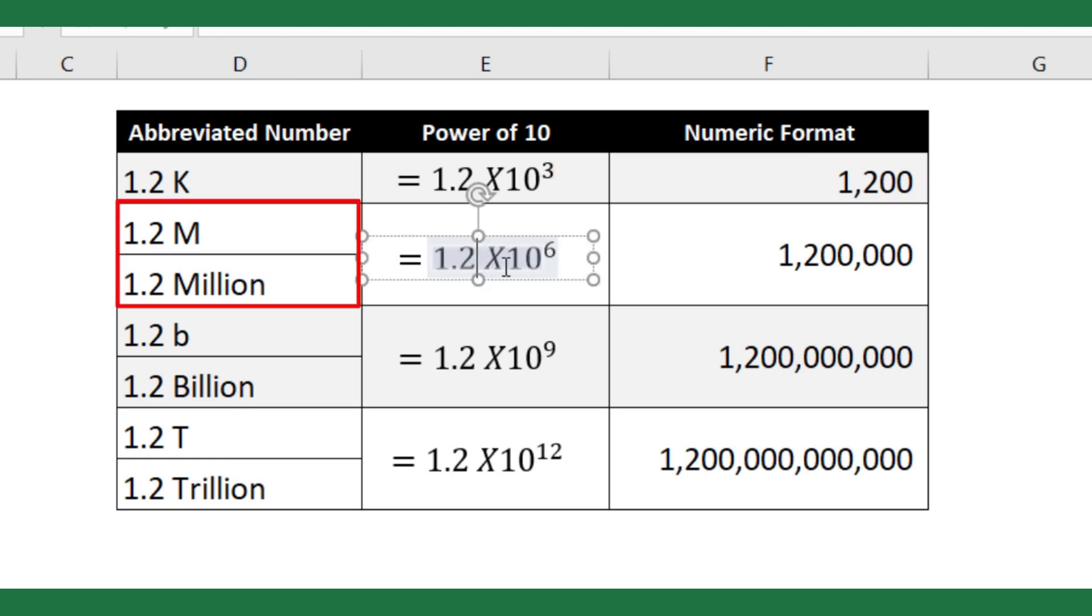1.2M means the number 1.2 to be multiplied by one hundred thousand, that is ten to the power six, and so on.